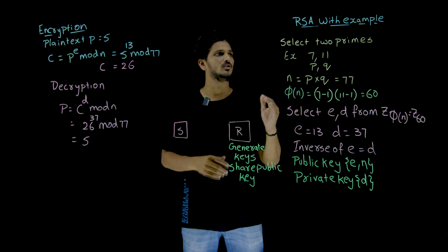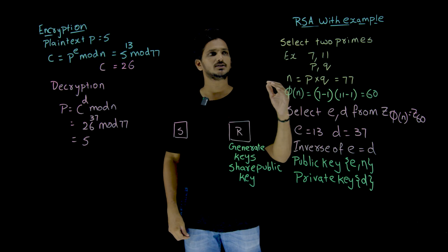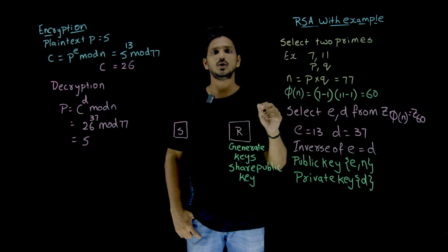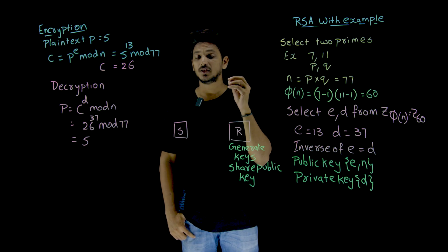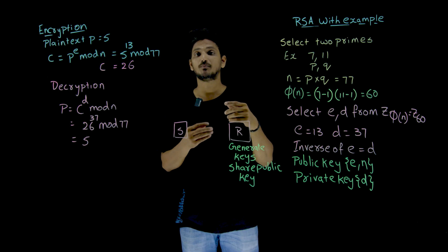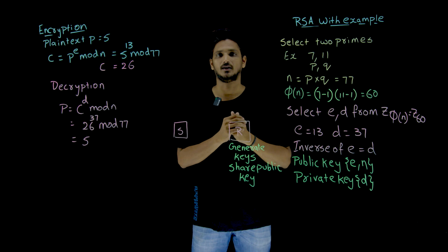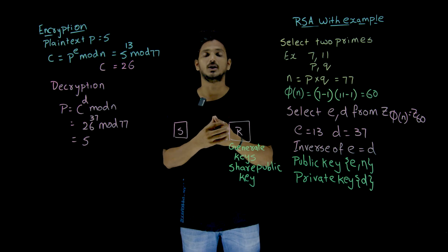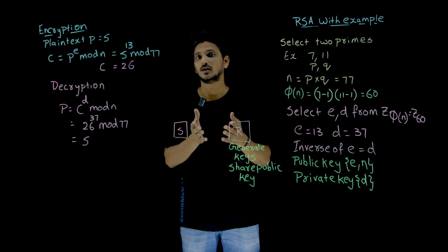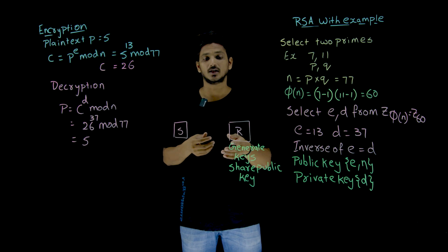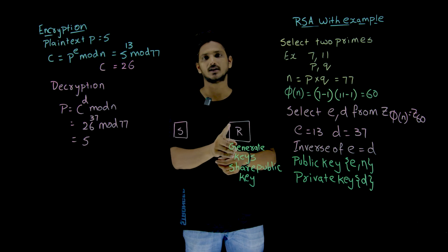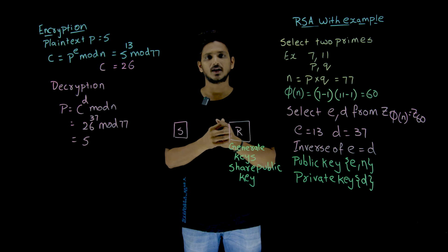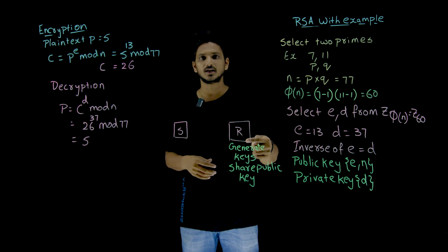Now coming to the concept, first we need to understand that in RSA we are going to do asymmetric key cryptography. Here we are having public key and private key. Who is going to generate these? The receiver. If the receiver wants to get the data, he is going to generate the keys, public and private keys.